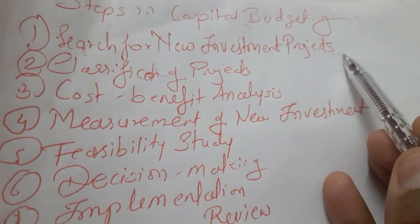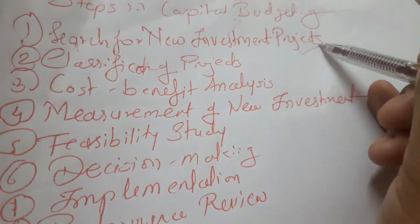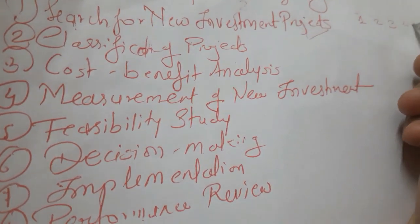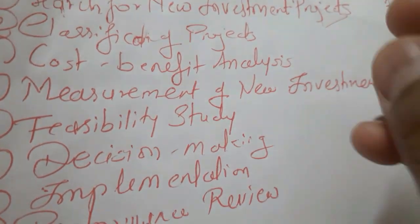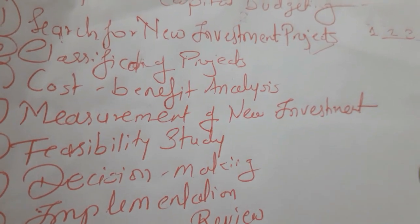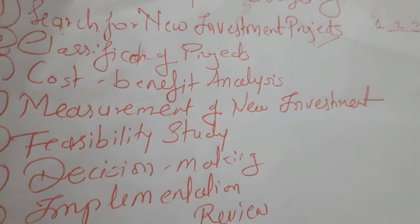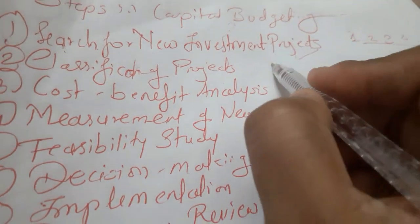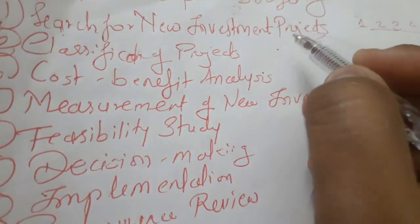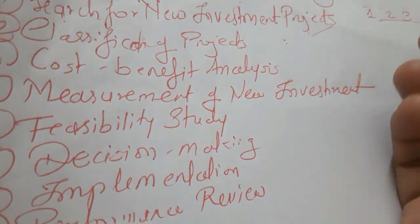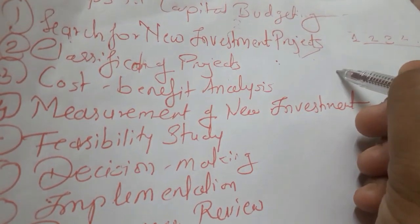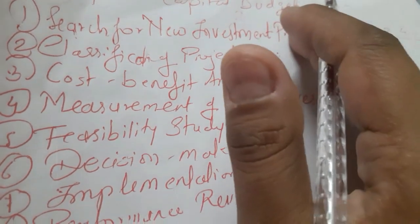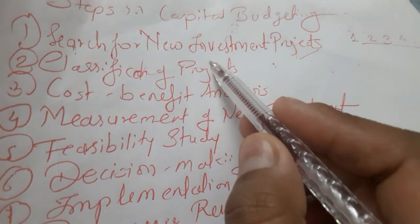The first step is searching for a new investment project. The organization will first search different types of projects — project number one, two, three, four, five — and research what each has been used for, so that they can categorize and differentiate among the projects. For example, comparing investing in one company versus another to see where you get more return. Now the searching process is done.